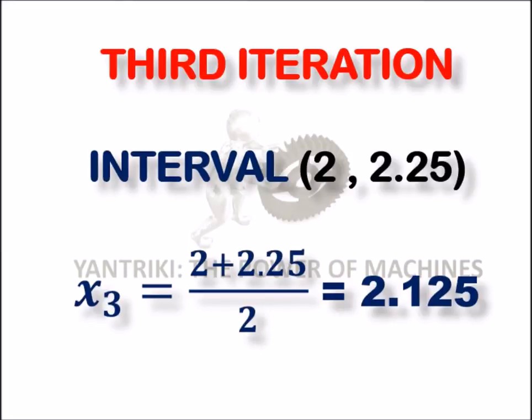Now, using the third iteration, we will get x₃ = (2 + 2.25)/2 because 2 and 2.25 are the intervals. So, the value of x₃ will be 2.125.